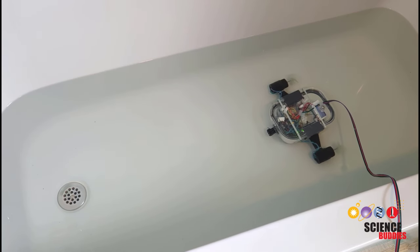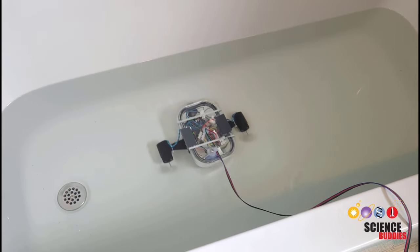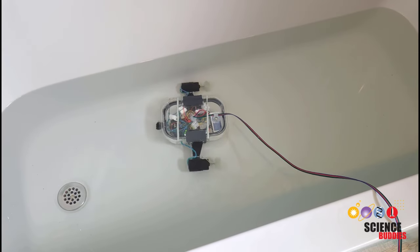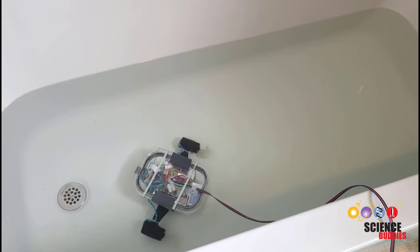This made the ROV sink so it could skim along the bottom of a smooth surface, like a bathtub or a pool. You probably wouldn't want to try this on the bottom of a lake or pond where it could get stuck.